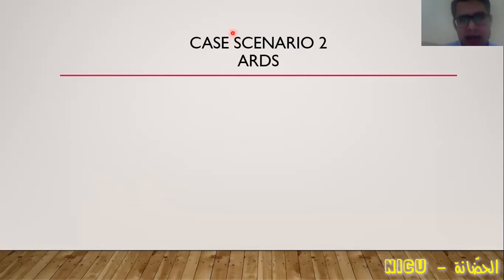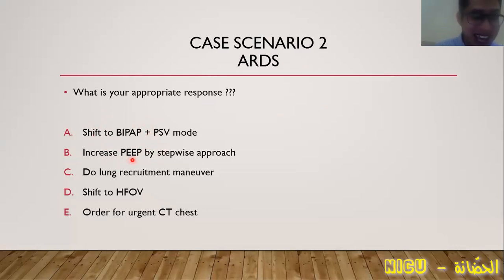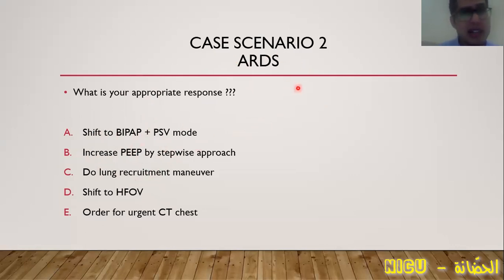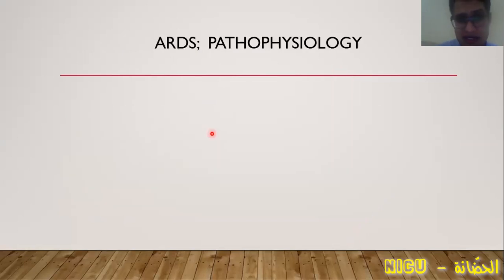Now dealing with COVID complicated by ARDS. What is the appropriate response? To answer this, we must know the pathophysiology of ARDS. ARDS is a restrictive lung disease — not obstructive — affecting the lung parenchyma. It involves marked, severe, bilateral lung infiltrates affecting most of the lung tissue. It is inflammatory and heterogeneous in character — not affecting all lung tissue to the same extent at the same time.